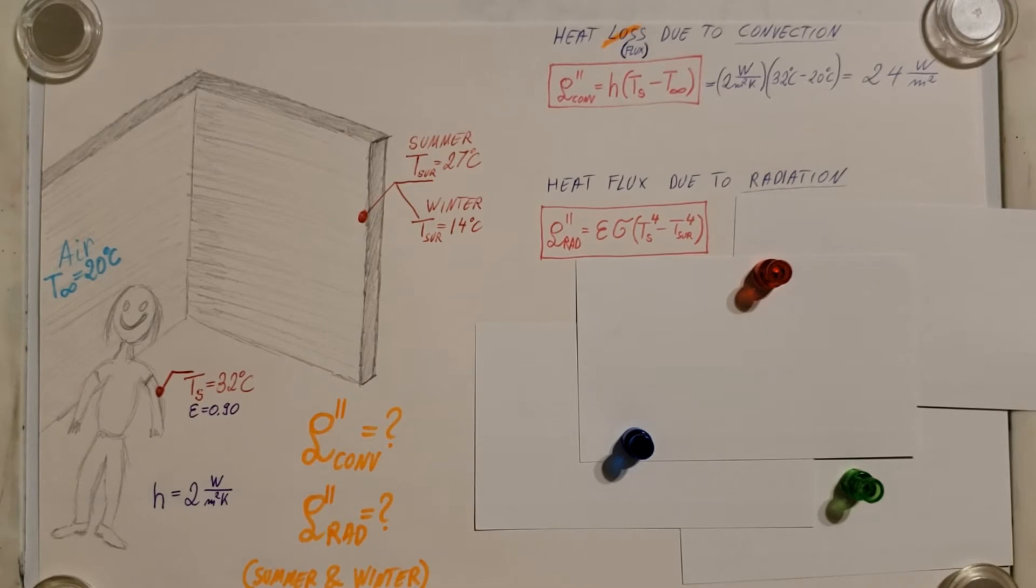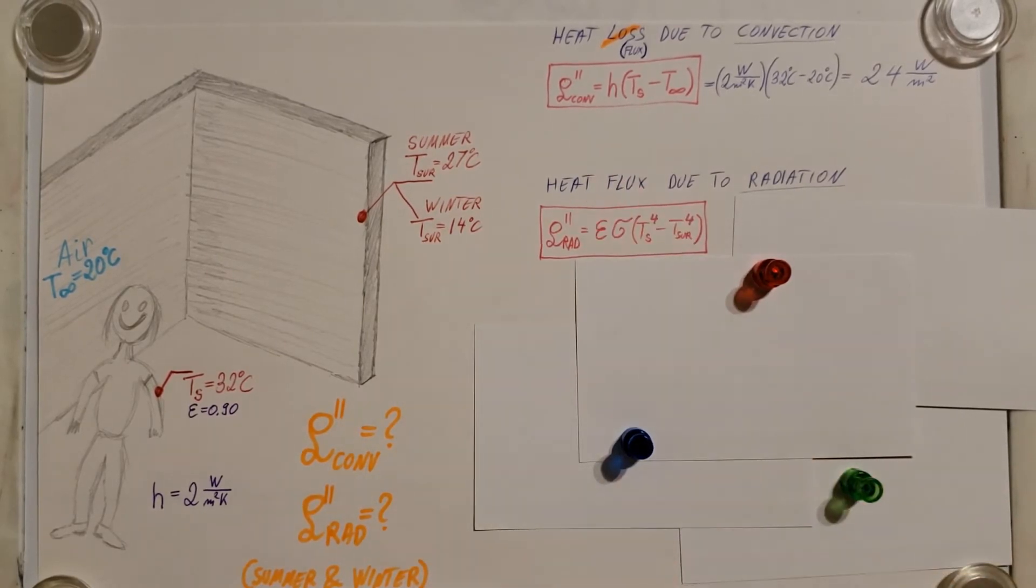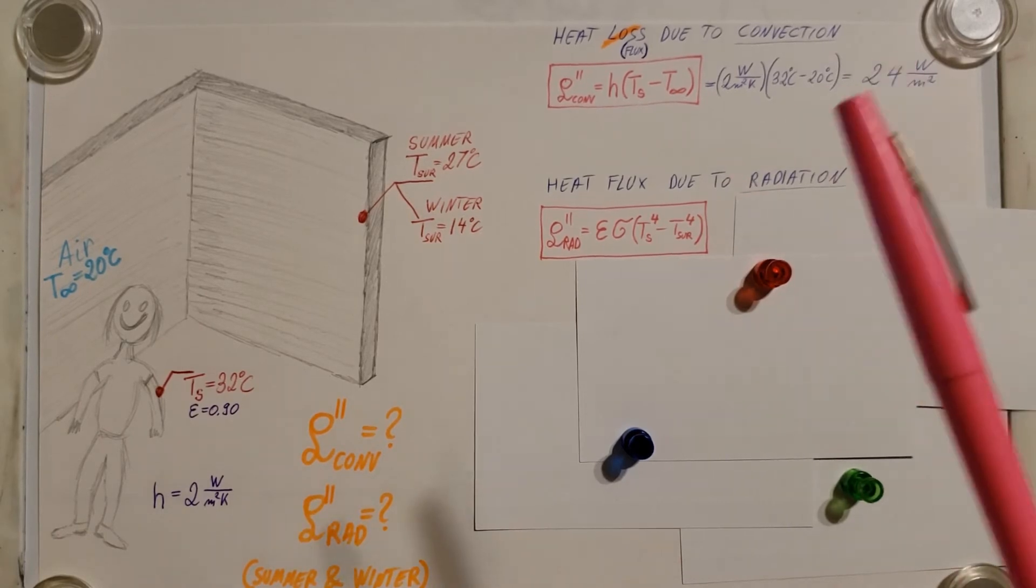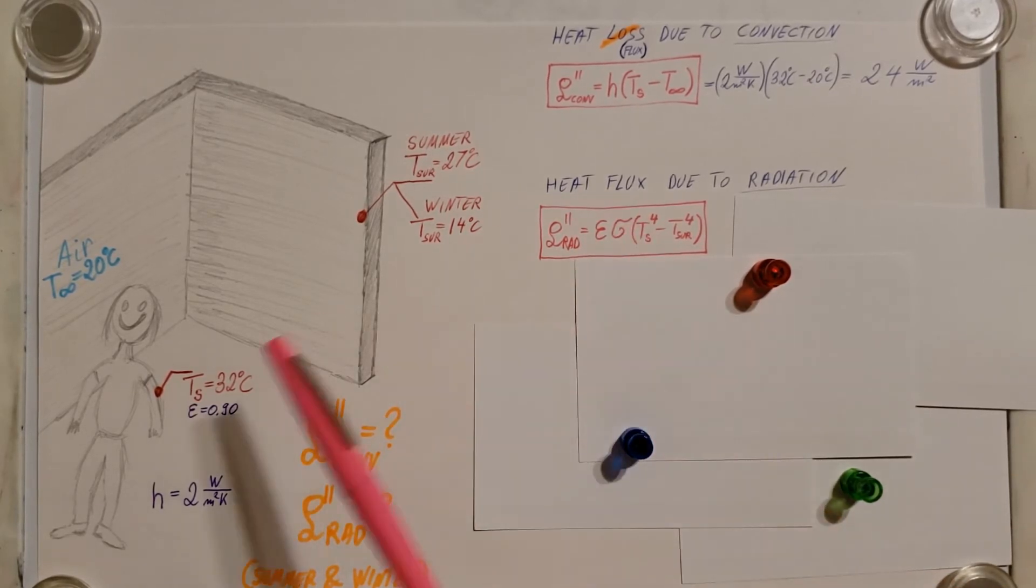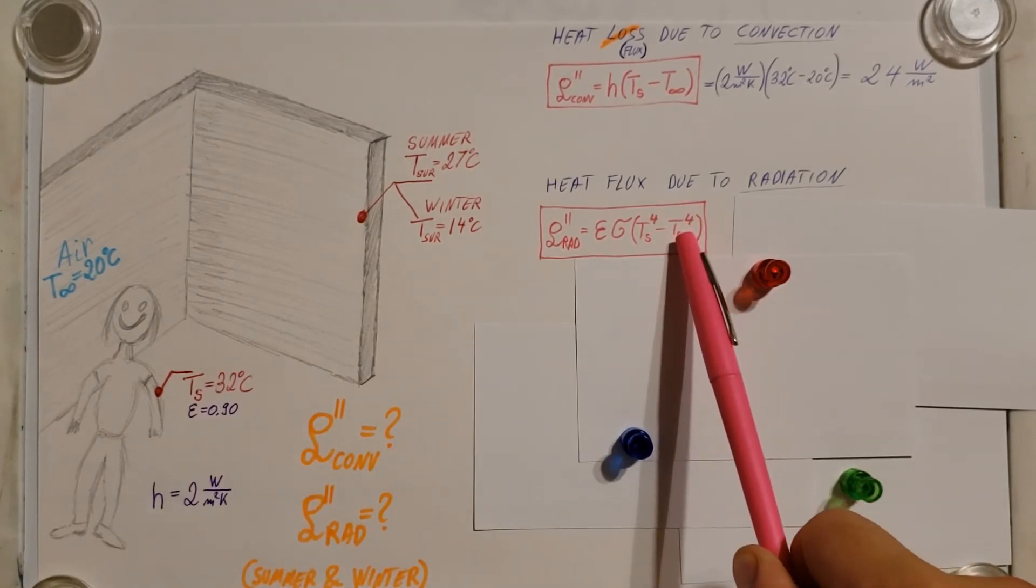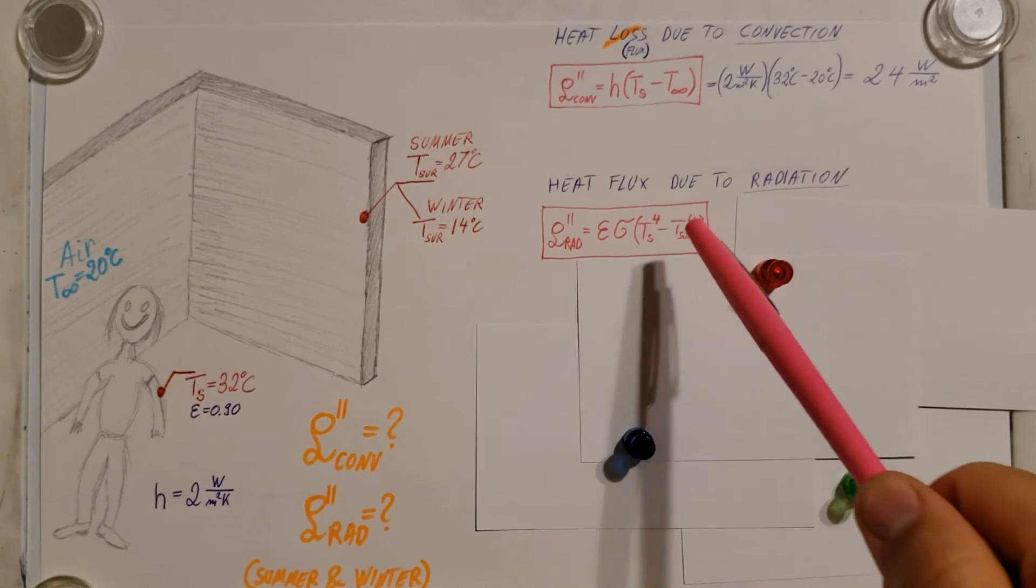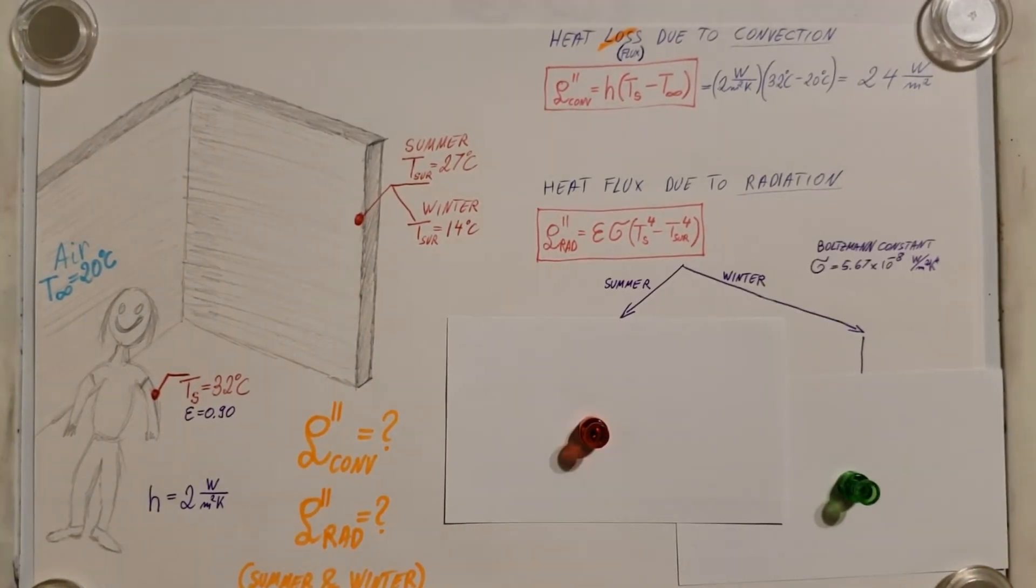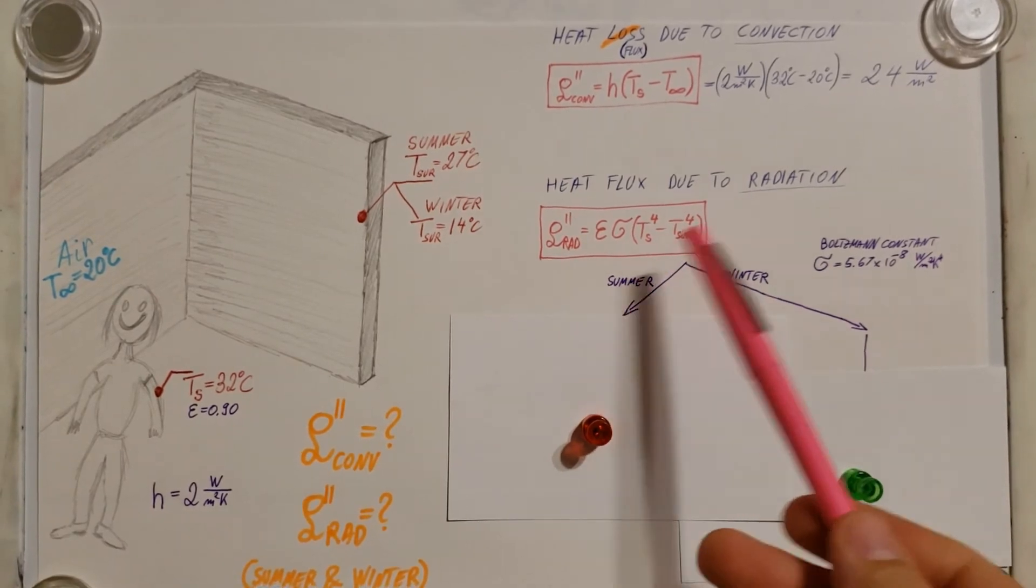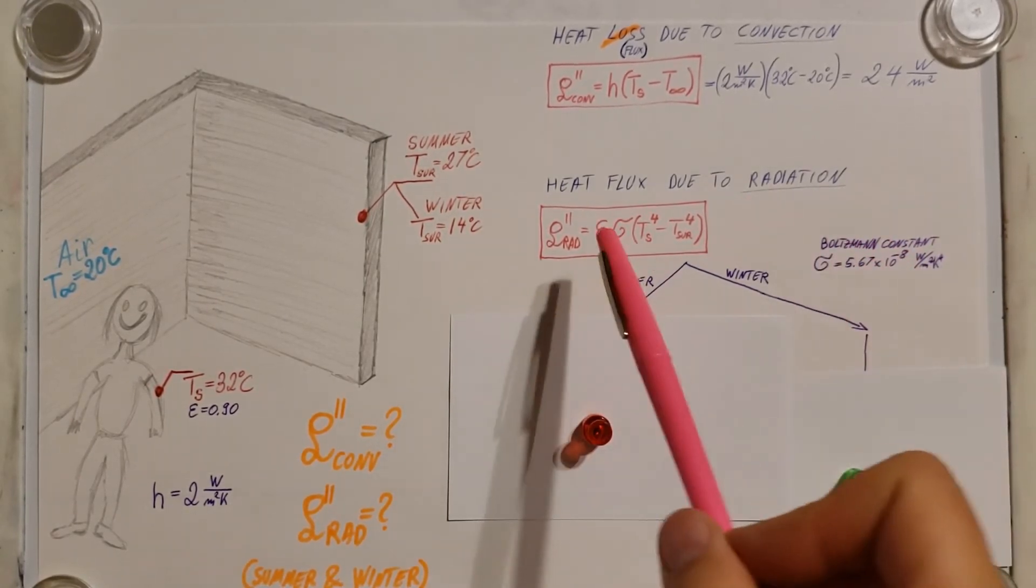Now, our next heat loss method is radiation. So let's take a look at the heat flux due to radiation. What kind of heat flux does our body lose when we consider radiation in the room? Now, let's look at the formula. The flux of radiation is emissivity, the Boltzmann constant, TS, which is the person's surface temperature, minus the temperature of the surrounding. And that's going to be the temperature of the wall. That's the surrounding that surrounds the person. So this T surrounding, we have two values for it. So I'm going to go ahead and split my screen in two. And this way, we're going to be able to calculate it separately for summer, separately for winter. Here's my Boltzmann constant, 5.67 times 10 to the negative 8. That's what we're going to plug in here.